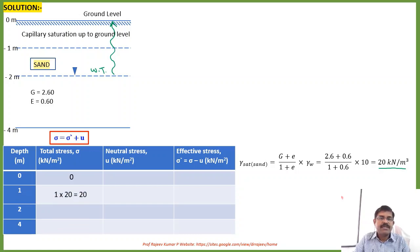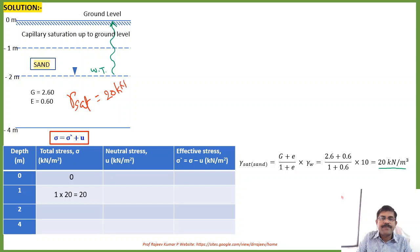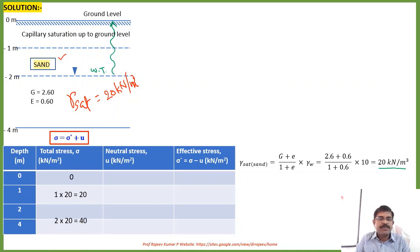You can directly calculate total stress with respect to depth and unit weight. At 1-meter depth, it is 1 × 20 kN/m² = 20 kN/m². At 2-meter depth, it is 2 × 20 = 40 kN/m². At 4-meter depth, it is 80 kN/m². Throughout this profile, there is one type of soil — sand — with saturated unit weight 20 kN/m³.